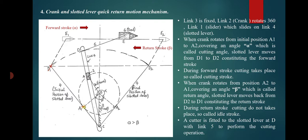The crank then rotates from A2 to A1, covering an angle beta, which is called the return angle. The slotted lever moves back from D2 to D1, constituting the return stroke. During the return stroke, cutting does not take place, so it is called the idle stroke. The return stroke is not a cutting stroke because it is an idle stroke.